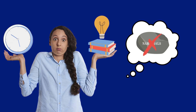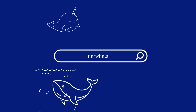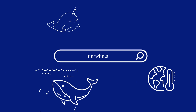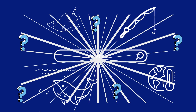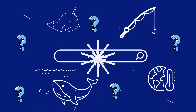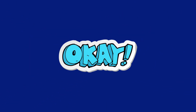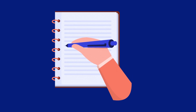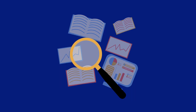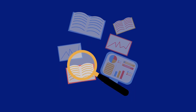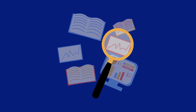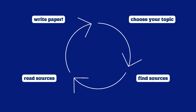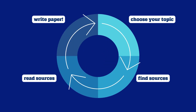Doing some initial searches in a library catalog or on the web might just open up more questions or send you in a different direction, and that's okay. Even once you start writing, you might realize that you need to find additional sources and go back to the research stage. This is called an iterative research process.